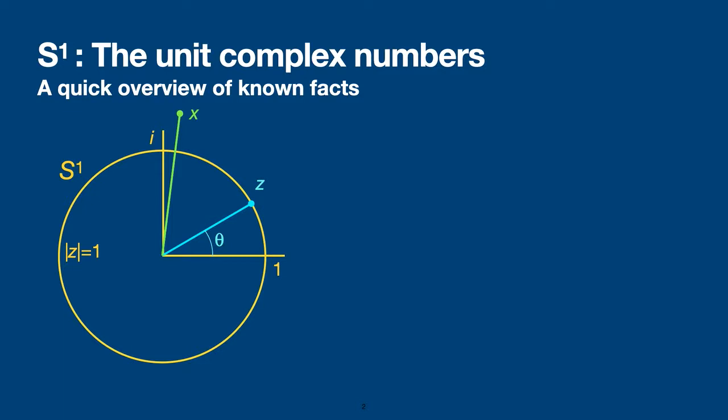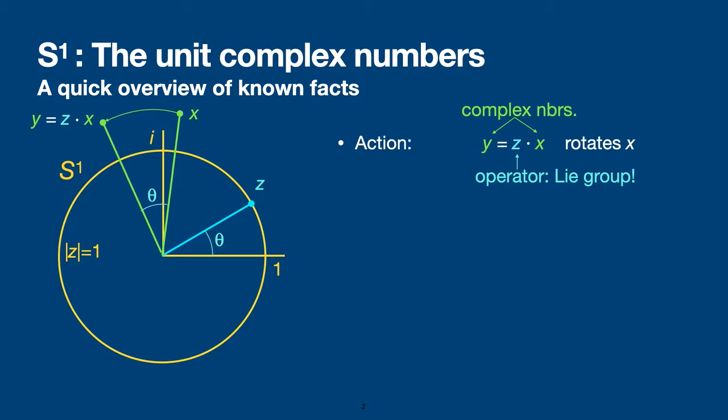I'm talking about the complex plane and the unit complex numbers and the power they have to rotate vectors. You all know that if you multiply a complex number X by a unit complex number Z, the effect of Z on X is to rotate it, producing Y. Z is a member of the unit complex numbers, and the unit complex numbers is one of the easiest examples of a Lie group.